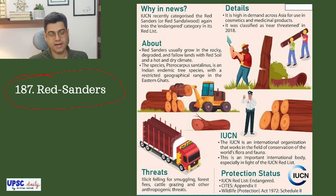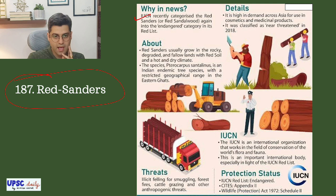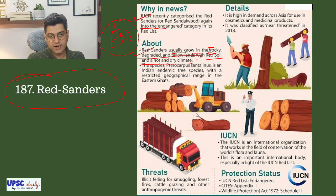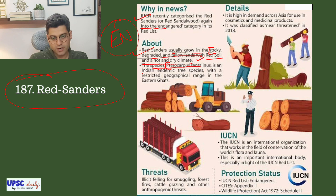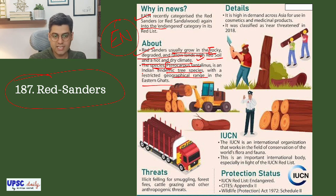The next topic is Red Sanders, an important flora in news. IUCN has recently re-categorized Red Sandalwood or Red Sanders into the Endangered category. Red Sanders usually grow in rocky, degraded and fallow lands with red soil and hot and dry climate. Scientific name Pterocarpus santalinus — it is an Indian endemic tree species with a restricted geographical range in the Eastern Ghats.